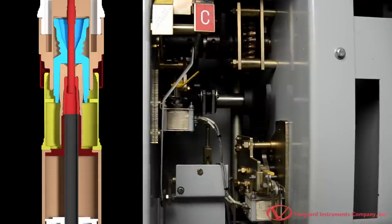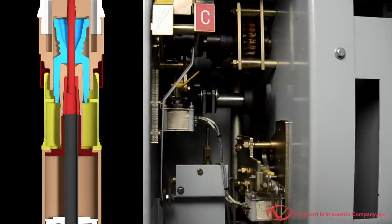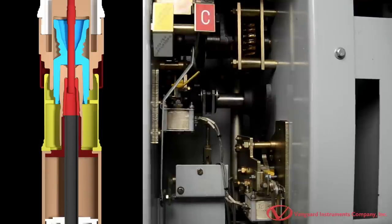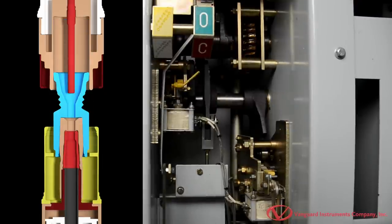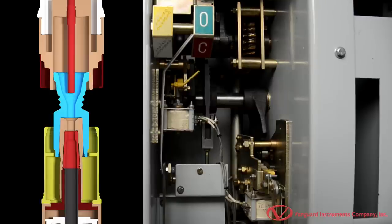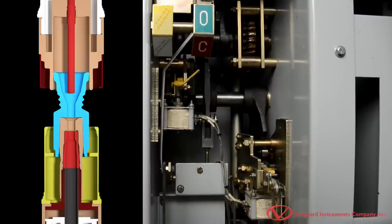Ideally, in the closed position a circuit breaker should act as a perfect conductor to ensure optimal current flow. In the open position, an ideal breaker should act as a perfect insulator and should be able to break the current instantaneously.